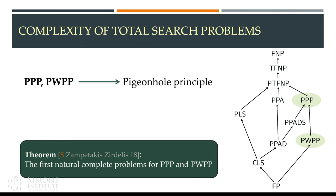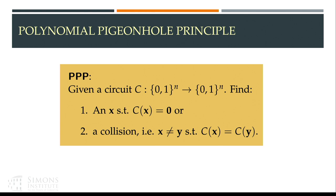Let's start with the first result about PPP and weak PPP. These two classes have to do with the pigeonhole principle. In PPP, the input is a circuit with N inputs and N outputs, and we are looking either for a pre-image of zero or a collision. We know that either the circuit is compressing so there exists a collision, or it's a permutation so we can find a pre-image of zero. That's why this problem is complete, and PPP contains all problems reducible to this one.